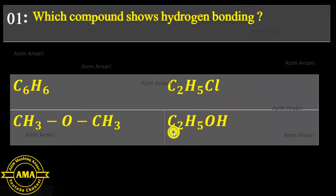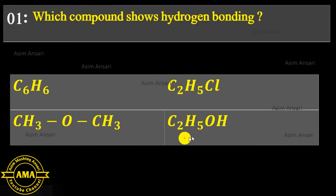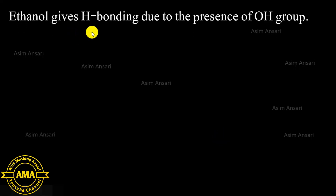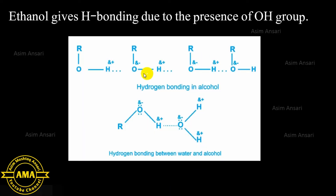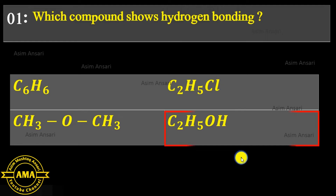First MCQ: Which compound shows hydrogen bonding? Options: C6H6, C2H2Cl, CH3OCH3, C2H5OH. Ethanol (C2H5OH) gives hydrogen bonding due to the presence of a hydroxyl group, as shown in the diagram illustrating hydrogen bonding in alcohol and between water and alcohol. The exact answer is C2H5OH.